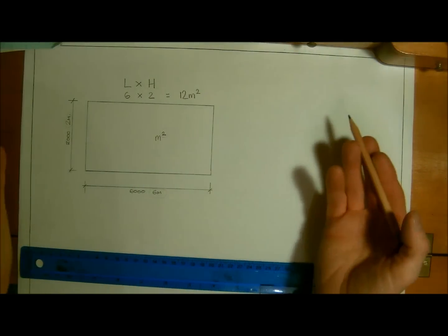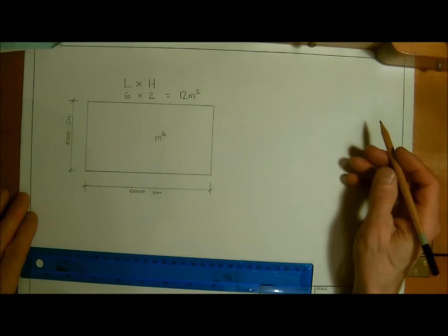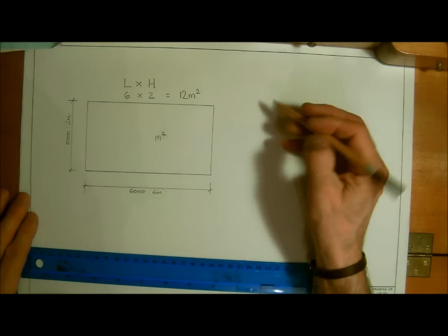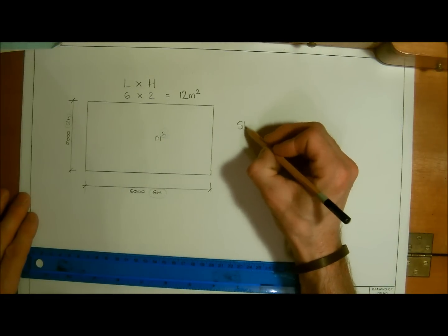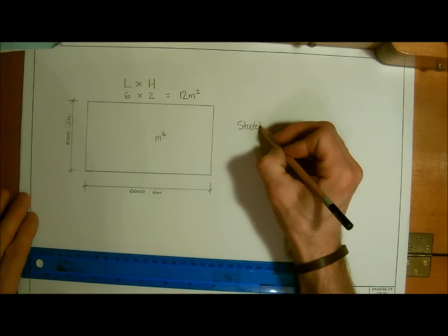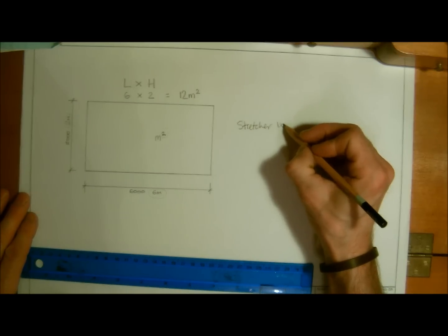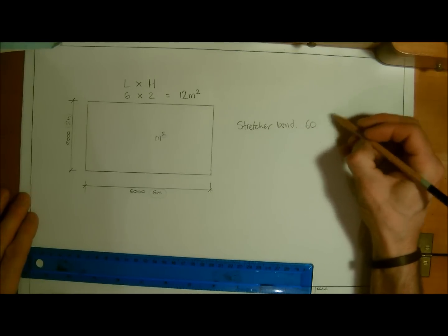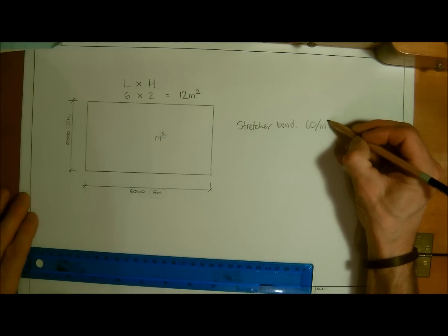Okay, so that's surface area but we need to convert this into bricks now. So again what we're going to learn is that in stretcher bond, if I write this down, stretcher bond, we will have sixty bricks per meter squared.